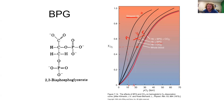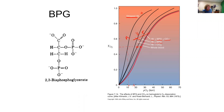The last black line is hemoglobin with both BPG and CO2. Together they shift the curve farther to the right than either alone, indicating additive effects — and suggesting they interact with hemoglobin at different sites.